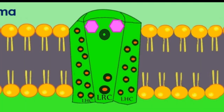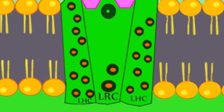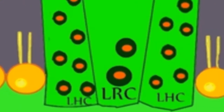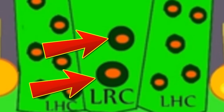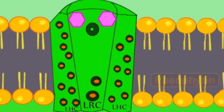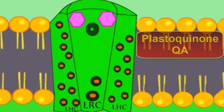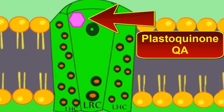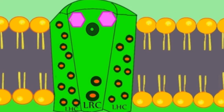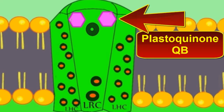Within the light reaction center is a special pair of chlorophyll molecules, a pheophytin molecule, a plastoquinone QA, and a plastoquinone QB. Plastoquinone QB is a mobile carrier.